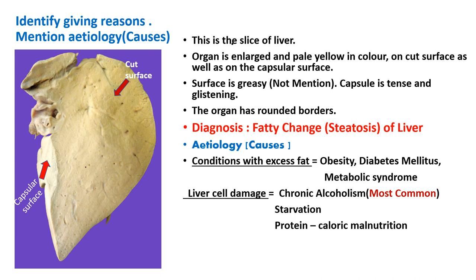Metabolic syndrome is increasingly seen in younger, obese populations. They have dyslipidemia with very high triglyceride levels, low HDL, insulin resistance, and increased abdominal girth. Liver cell damage due to chronic alcoholism is the most common cause. Starvation and protein-caloric malnutrition such as marasmus and related conditions may also show fatty change of the liver.